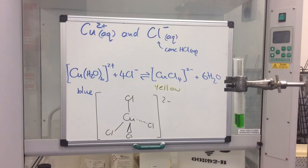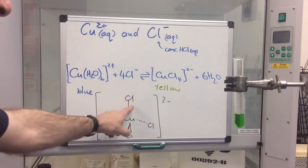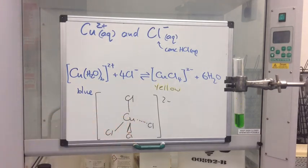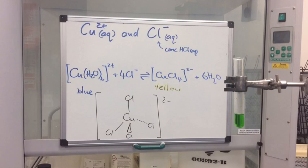There's a diagram of the new complex ion — you can see it has a tetrahedral shape with bond angles of 109.5°. The reason it's tetrahedral is that chloride ions are larger than water molecules, so physically only four can fit around the central ion. Water molecules are much smaller, so six can fit to give the octahedral shape, whereas the larger chloride ions give a tetrahedral shape with only four ligands.